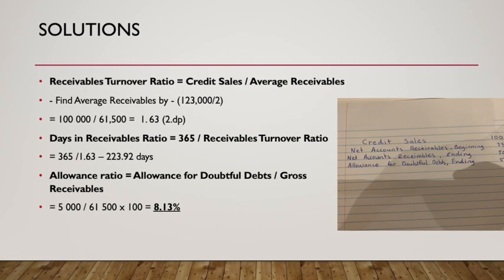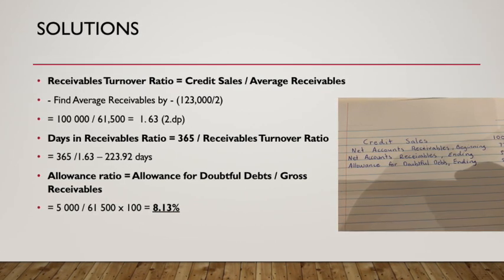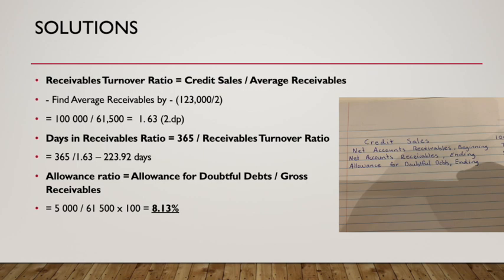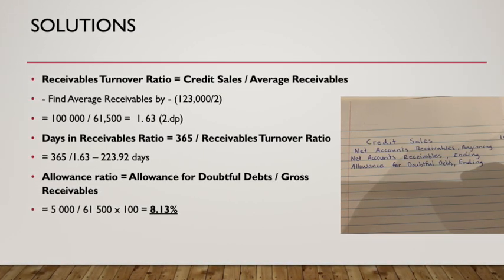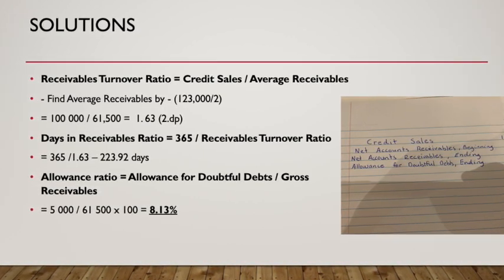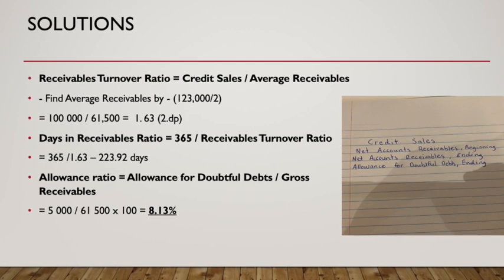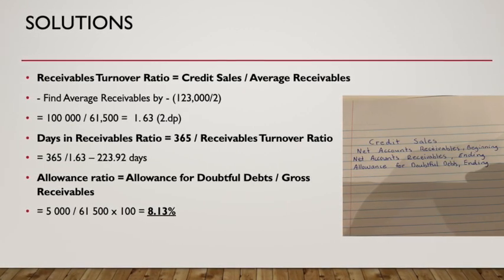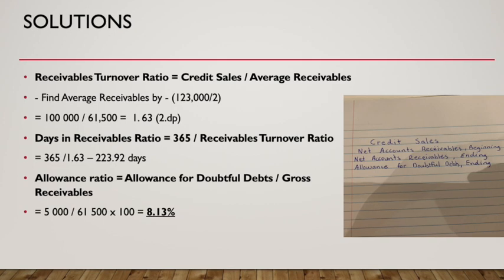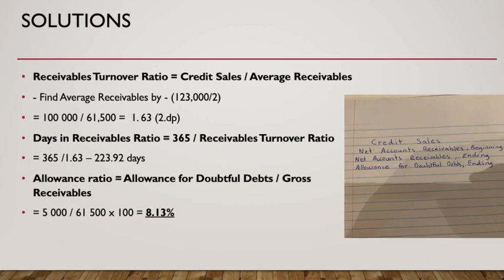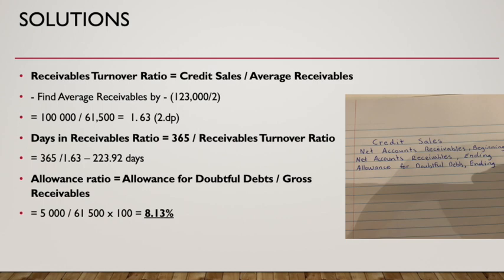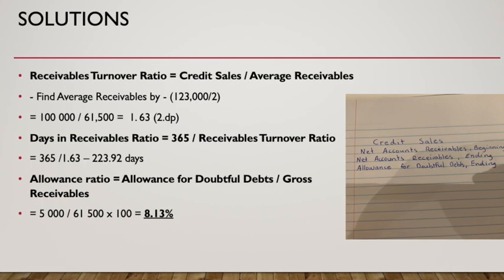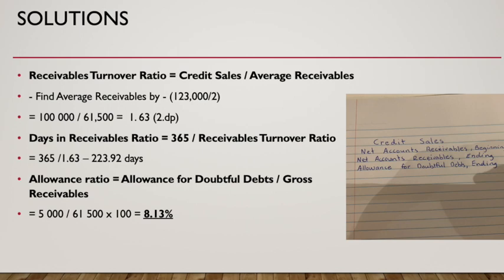We then proceed to do the days in receivables ratio. This is calculated by doing 365 divided by 1.63, which gives us 223.92 days. Lastly, we do the allowance ratio. We do this by going 5,000 divided by 61,500 and times that by 100. This gives us 8.13%, which is the percentage of the business they will have to write off.